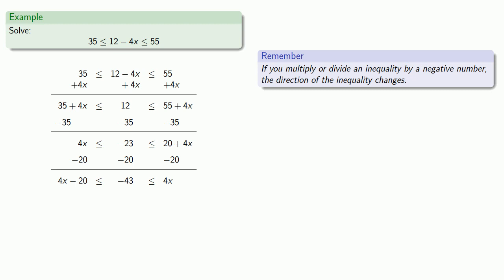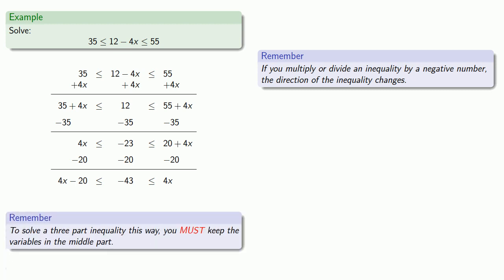And this leads to an important idea: to solve a three-part inequality this way, you must keep the variables in the middle part. Otherwise, you won't be able to isolate them.